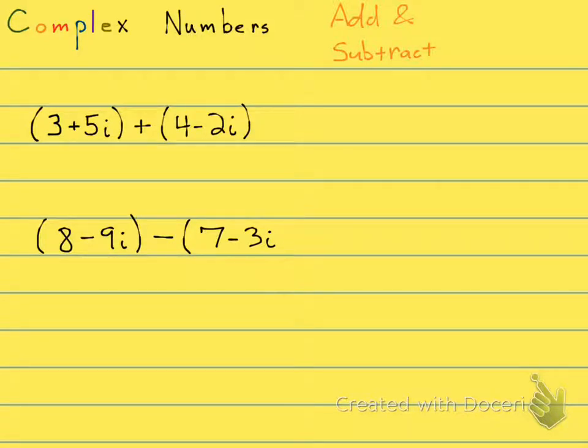If you look at this one on top, we have 3 plus 5i plus 4 minus 2i. The 3 and the 4 are going to go together. 3 plus 4 is 7.